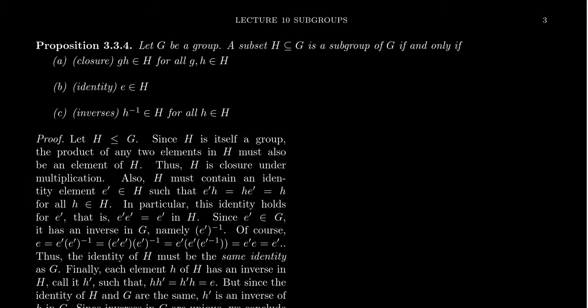In the previous video, we saw a counterexample of a subset of a group that could not be a subgroup. Not every subset will be a subgroup of a given group. There are some conditions that have to be met. The subset itself has to be a group using the operation that's already on the group, but with restriction.